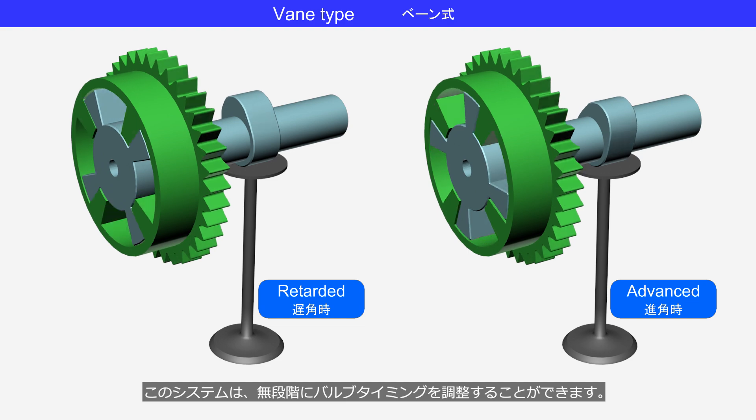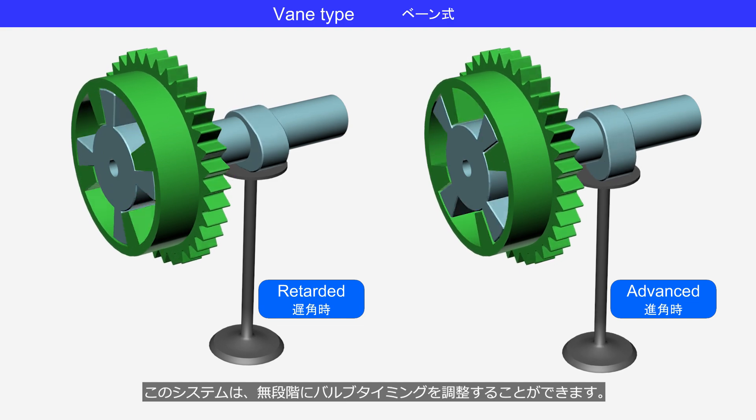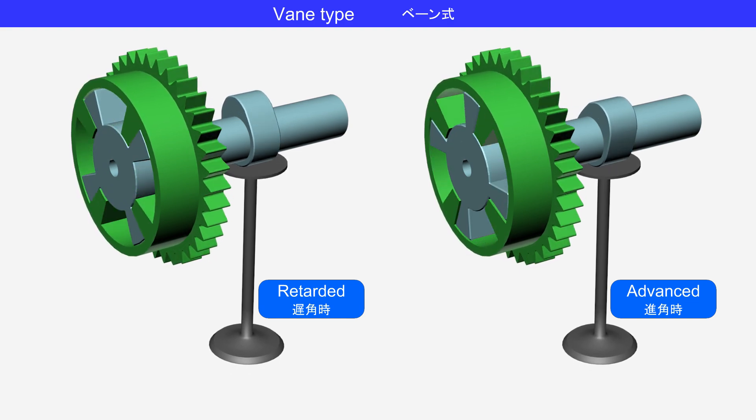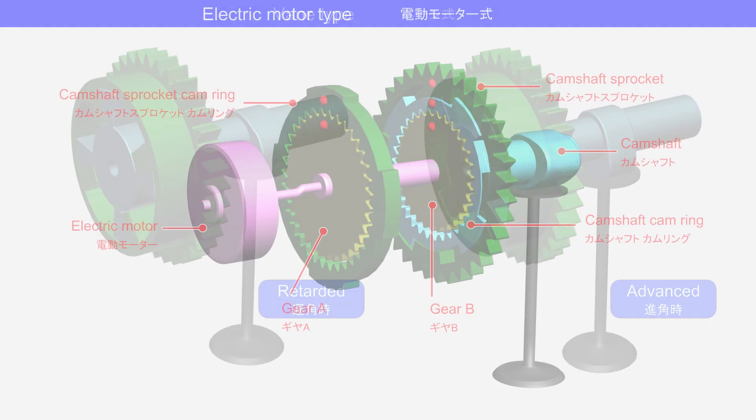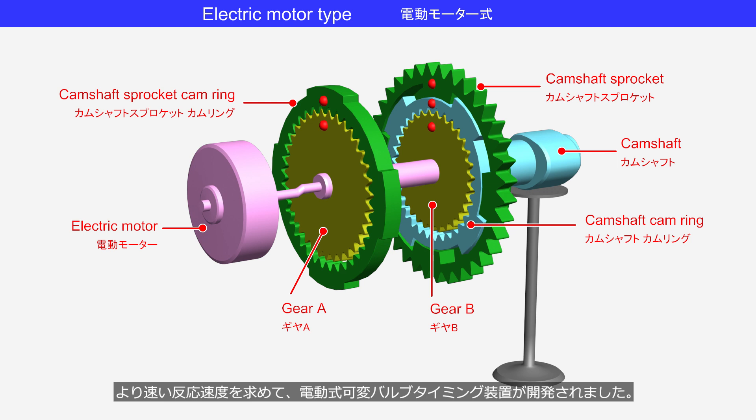This system can continuously adjust the valve timing. To achieve quicker response operation, electric variable valve timing systems are developed. There are various types, such as electric motor types and electromagnetic clutch types. This video introduces an electric motor type.